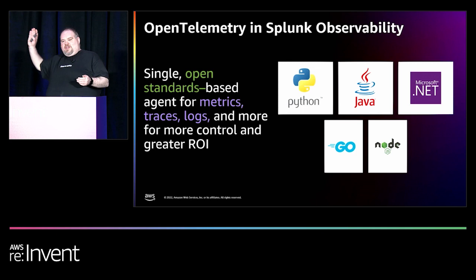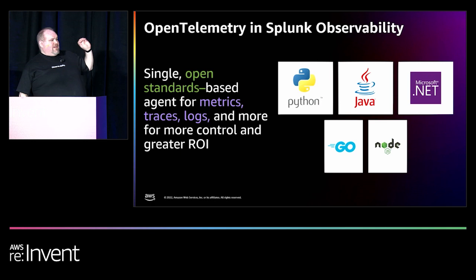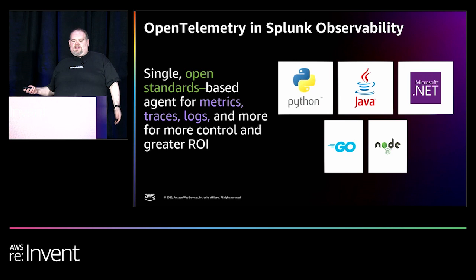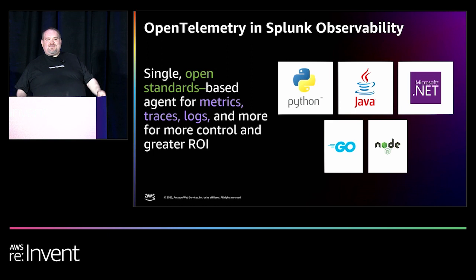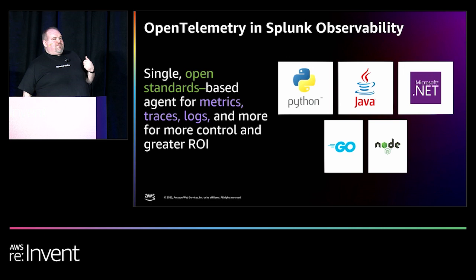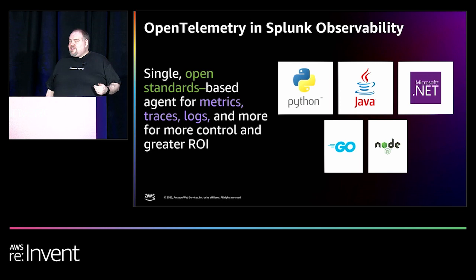OpenTelemetry has support for many programming languages. These are the ones supported by Splunk and our support staff that we'll happily guide you through setting up. The OpenTelemetry project itself supports many more, including boutique languages like Rust. It's open source, so if it doesn't support a language you like, you know where to send pull requests. The project uses a single open source agent — the Splunk distribution is open source as well — one framework to get your data in from any kind of application.